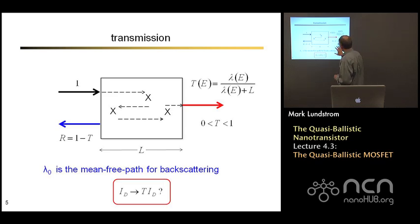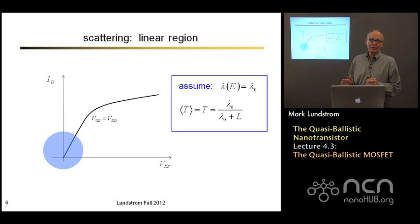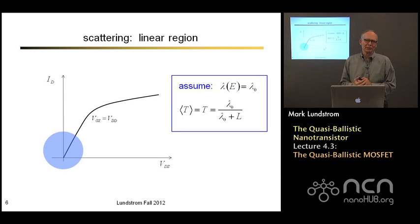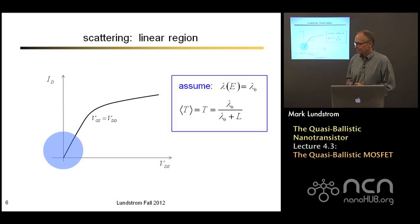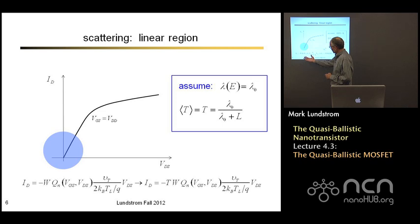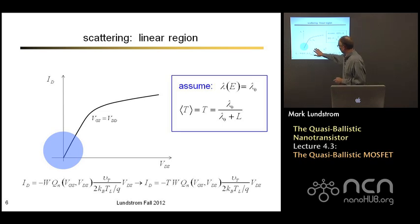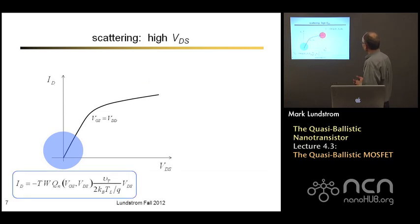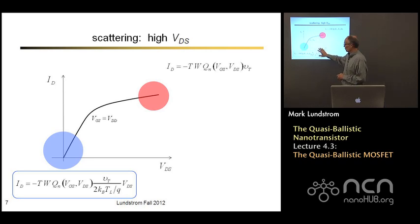So the question is, maybe this is easy — we just take our ballistic expressions and multiply by T. It turns out that's all there is to it under low drain bias. Assuming the mean free path is independent of energy (making the mathematics simpler), we can simply take our ballistic expression from week three and multiply it by the transmission. That gives us an expression for the linear regime current in the presence of scattering. It was almost trivial to do the low drain bias regime.